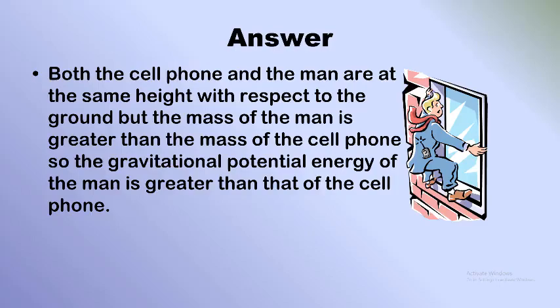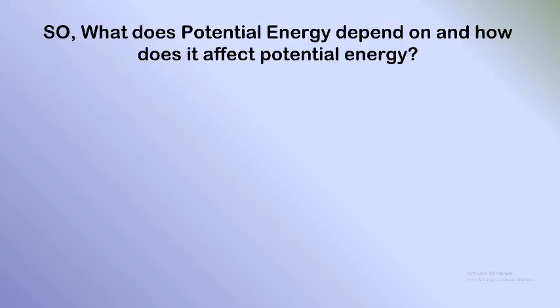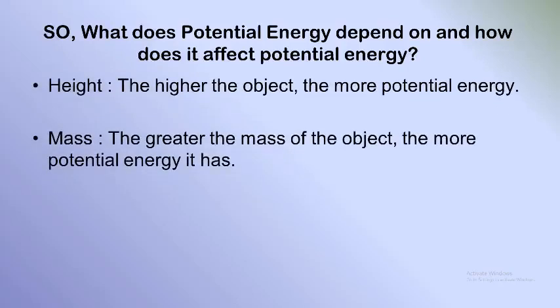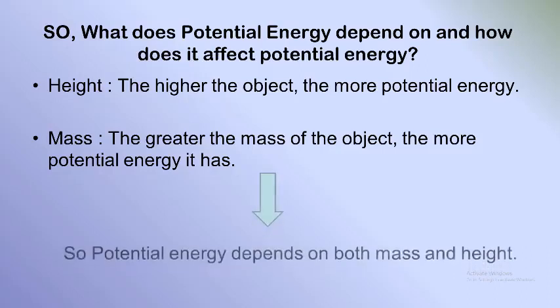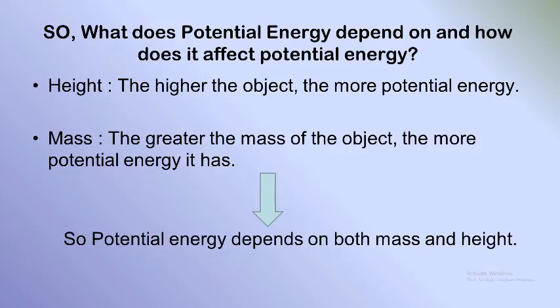As a conclusion, gravitational potential energy depends on two factors: height and mass. The higher the object, the more potential energy it has. The greater the mass, the more potential energy it has. So the gravitational potential energy depends on both the mass in kilograms and the height in meters.